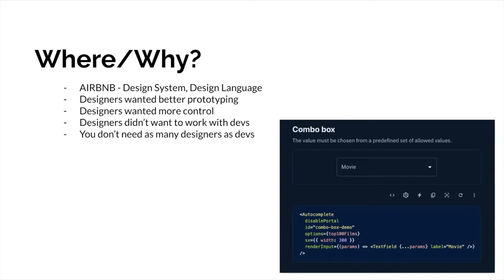Airbnb kicked off the whole server-driven UI thing mostly because their designers were building things and then wanted to be able to see what they would look like on a phone or on a website. They didn't want the developers to have to go and build it, because developers are slow and regularly don't do a very good job of converting the vision of a designer to something that a user can actually interact with.